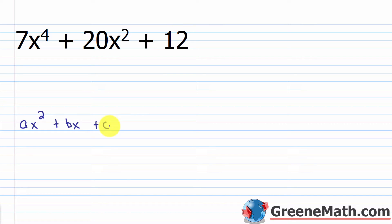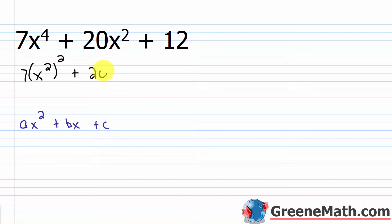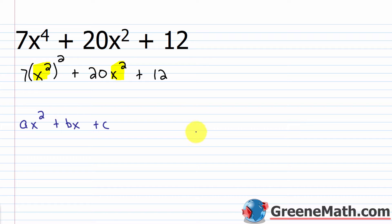The way this works: I can rewrite 7x to the fourth as 7 times (x squared) squared, because if you take x squared and square it, you get x to the fourth power — nothing has changed. Then plus 20x squared, then plus 12. Now you can see there's an x squared here and an x squared here. So what if we made a substitution and let a variable equal x squared?